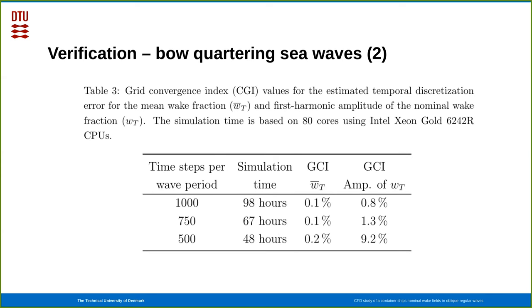We did a similar study for the required time step resolution, so we consider 500, 750, and 1000 time steps per wave period, and we again see that 750 is what is required if we want both the mean and amplitude below 2%. The 500 time steps per wave period would produce too large errors in the amplitude of the wake fraction.